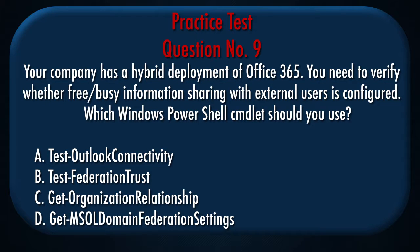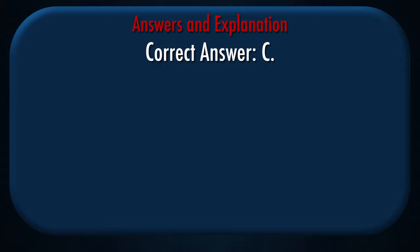Question number nine. Your company has a hybrid deployment of Office 365. You need to verify whether free/busy information sharing with external users is configured. Which Windows PowerShell cmdlet should you use? A. Test Outlook Connectivity. B. Test Federation Trust. C. Get Organization Relationship. D. Get MSOL Domain Federation Settings. Correct answer: C.